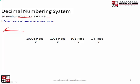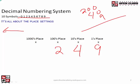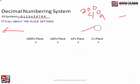Let's do one real quick. If I just write the number 249: two times a hundred is two hundred, four times ten is forty, nine times one is nine. You add all those together and you get 249. Whatever is underneath that place setting represents how many of that place setting exists — you do it in your head so quickly you don't even think about it.